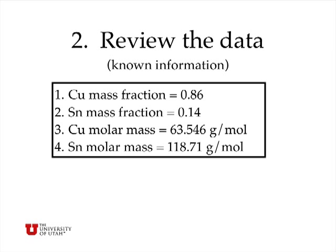Okay, so now let's review the data, which is step 2. I know the mass fraction of copper is 0.86. I also know that the mass fraction of tin must be 1 minus 0.86, or 0.14. I can look up in the periodic table of elements that the molar mass of copper is 63.546 grams per mole, and the molar mass of tin is 118.71 grams per mole.